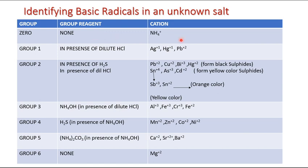In Group 1, we need a group reagent because we have three ions. Our group reagent for Group 1 is dilute HCl.